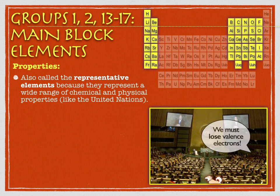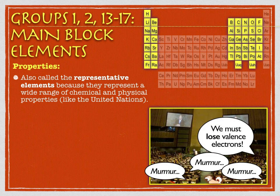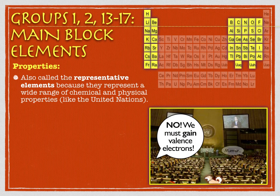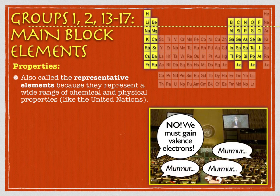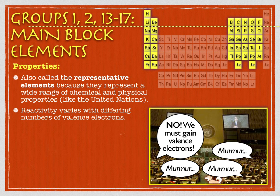Think about the United Nations — you're representing certain countries that want this and certain countries that want that. You've got certain elements that want to lose valence electrons, and certain elements that want to gain valence electrons. So it can be a little bit chaotic at times to look at the entire group. Really everybody's a part of the main block elements, except for the transition metals and the noble gases.